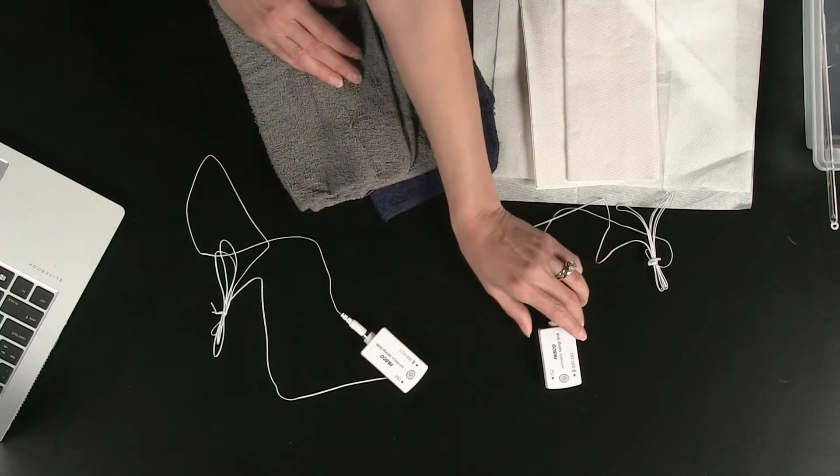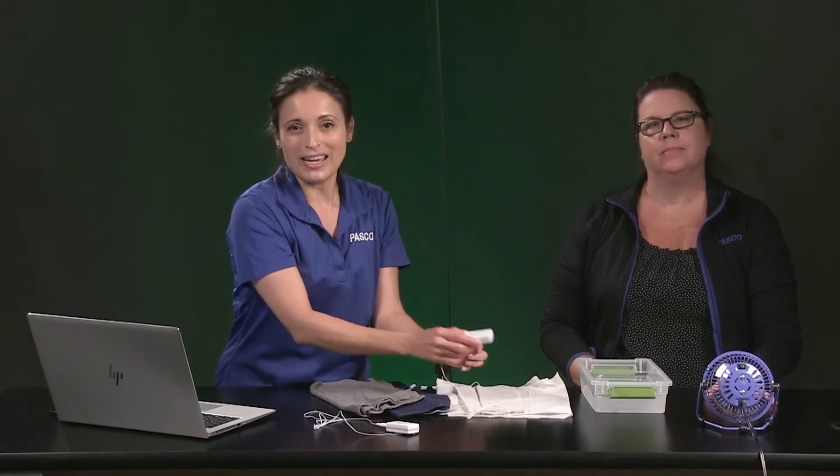I've already connected these two temperature links in SparkView and I can tell which is which because the number on the sensor box matches the number on the y-axis for each graph.